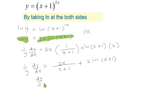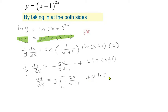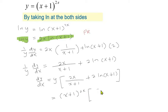So dy/dx equals y times [2x/(x+1) + 2 ln(x+1)]. Substituting y back in, we get dy/dx = (x+1)^(2x) times [2x/(x+1) + 2 ln(x+1)].